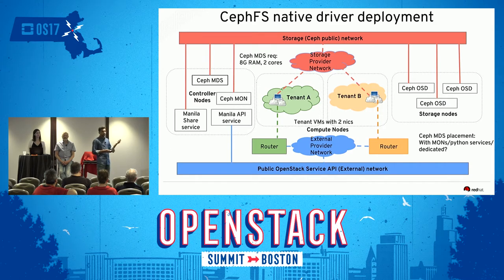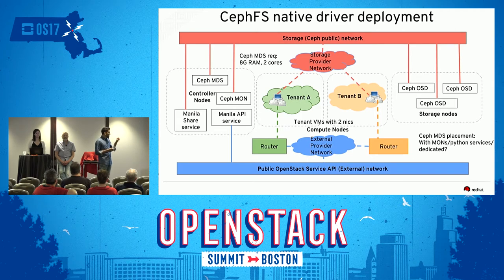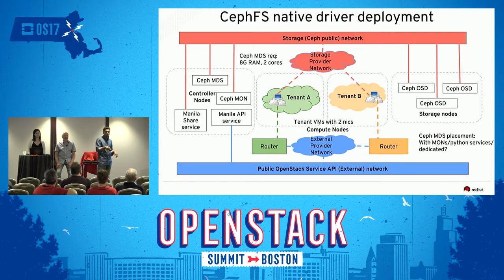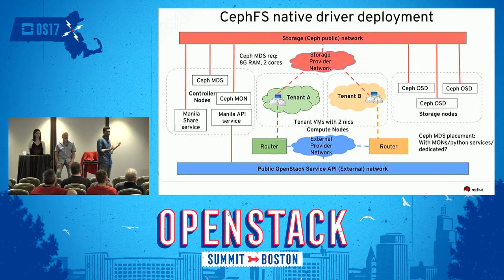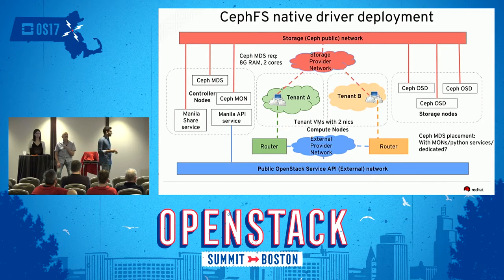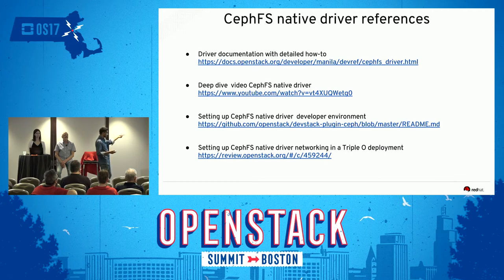Work was done to make sure that Triple-O can deploy the Ceph MDSs with composable roles, so you can place them on the node you want. Care must be taken so that Ceph MDSs don't affect other services — you don't want your Ceph MDSs running along with the OSDs; it's better to run them with the Ceph monitor services. For networking, OpenStack VMs are in tenant-defined private networks not connected to the public network, so you'd connect them through the Neutron router to the external provider network. You can add another NIC on the tenant VM that is on the storage provider network. It's easy to set up and we have documented that — the patch is in review.